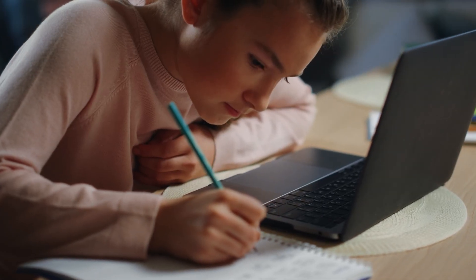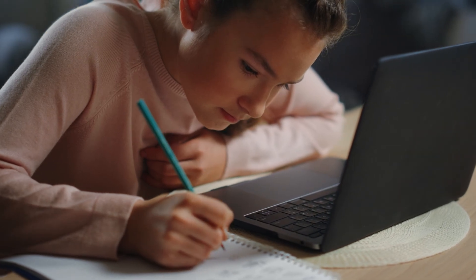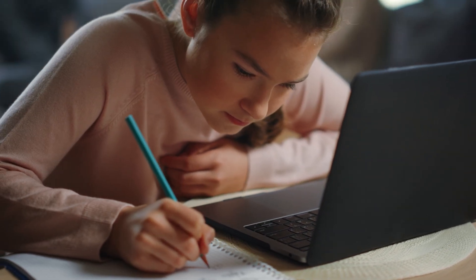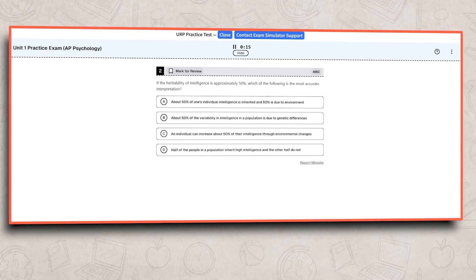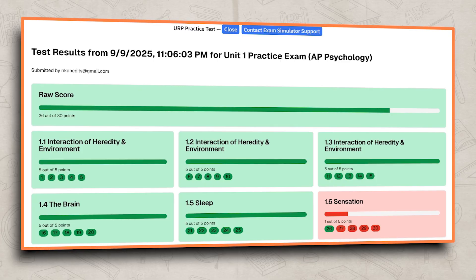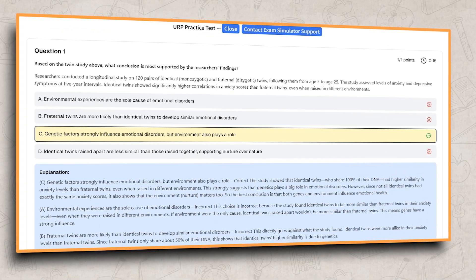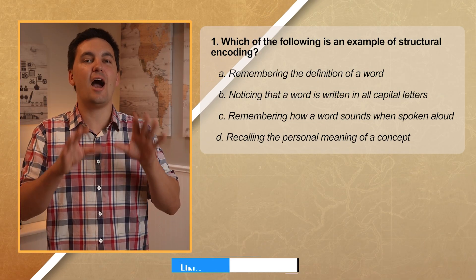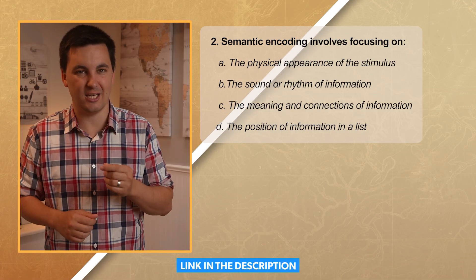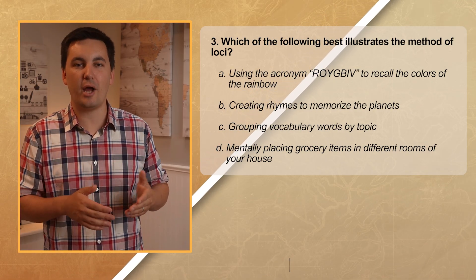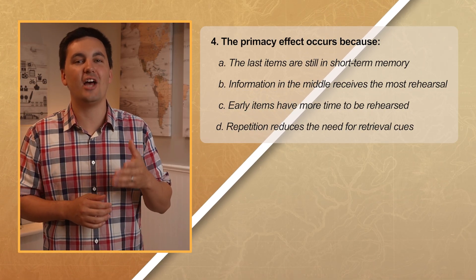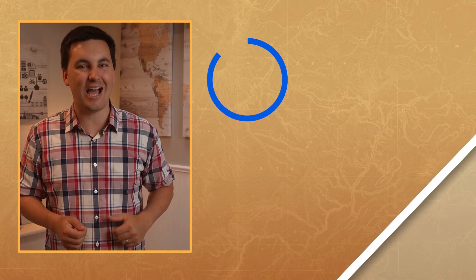So when you are studying, make sure you sometimes mix up the order of the information or take practice tests to identify your weak areas, then switch your studying up to reflect your test results. Go ahead and take the encoding practice quiz inside my Ultimate Review Packet. If you found value in this video, consider subscribing. As always, I'm Mr. Sin — thank you so much for watching and I'll see you next time.